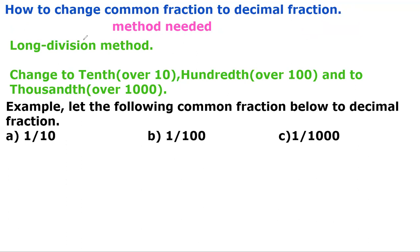Now, since you know how to change decimal fractions into common fractions, you must also know how to change common fractions back to decimal fractions. There are two methods: the long division method, or you can change the given fraction into tenths, hundredths, or thousandths — meaning you make the denominator 10, 100, or 1000 respectively.